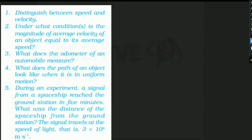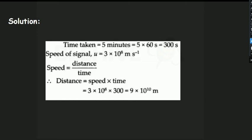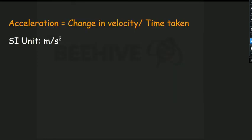The speed of light is 3 × 10⁸ meters per second. We have a time of 5 minutes, which is 5 × 60 = 300 seconds. Distance equals speed multiplied by time, which gives 3 × 10⁸ × 300 = 9 × 10¹⁰ meters.